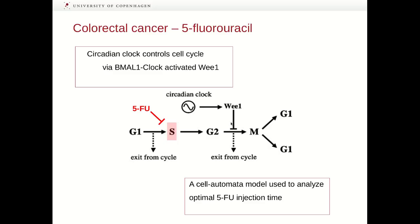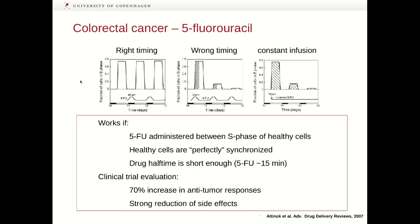Assuming that cancer cells have escaped this inhibition, we can apply a cell automata model to analyze the optimal application time of 5-fluorouracil. The upper panel shows three diagrams for right timing, wrong timing, or constant infusion of 5-fluorouracil. Each diagram shows the fraction of healthy cells that are in S phase with respect to time. If we apply 5-fluorouracil between the phases where healthy cells are in S phase, no healthy cells will be affected by the drug, giving us fewer side effects and more 5-fluorouracil available to target cancer cells.